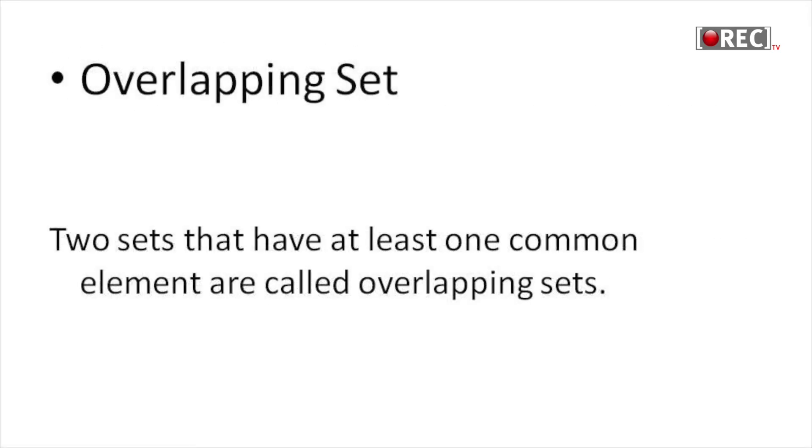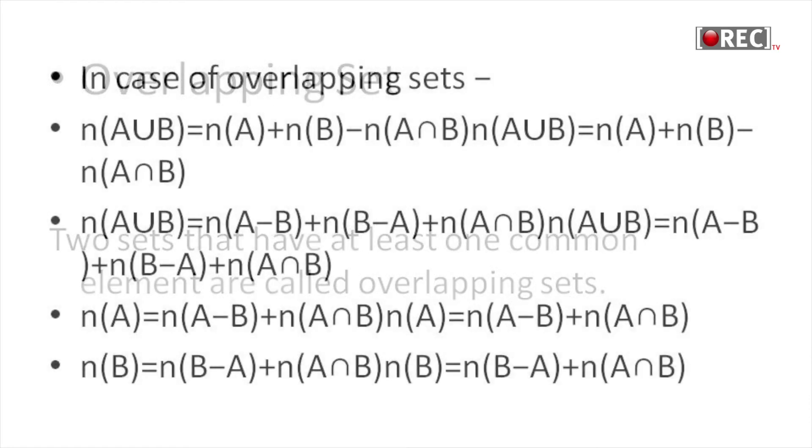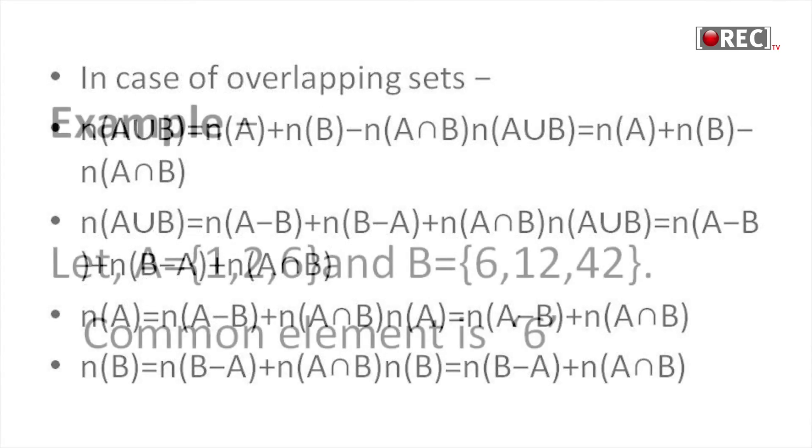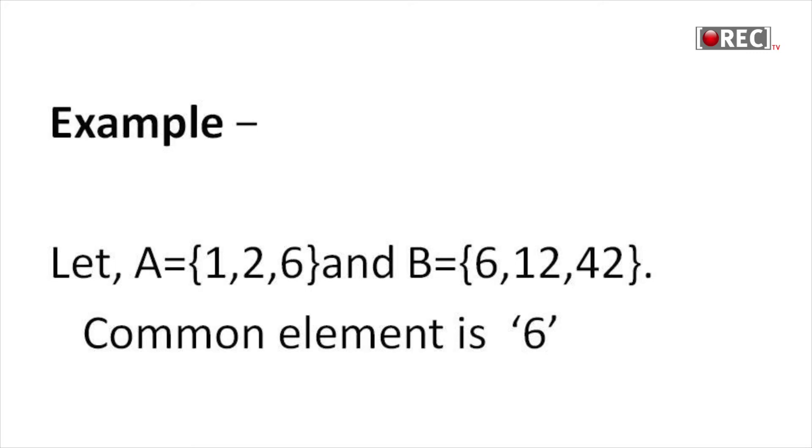Overlapping set: Two sets that have at least one common element are called overlapping sets. For example, let A equals 1, 2, 6 and B equals 6, 12, 42. The common element in both A and B sets is 6. Hence, these sets are overlapping sets.